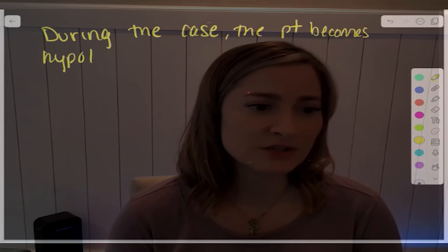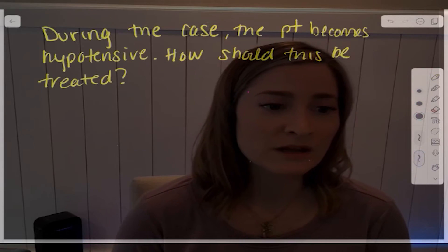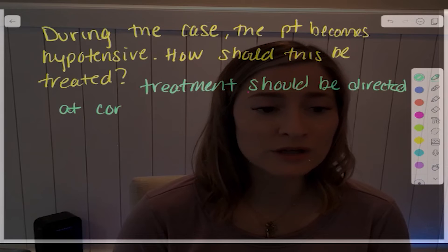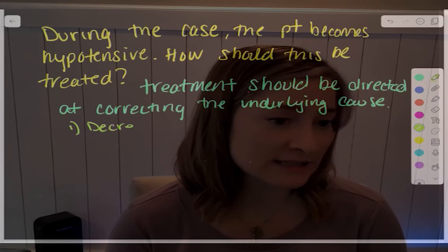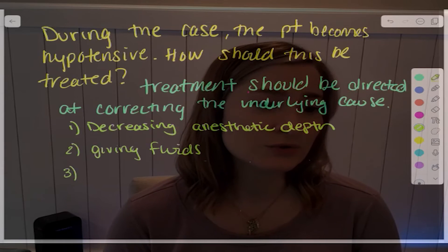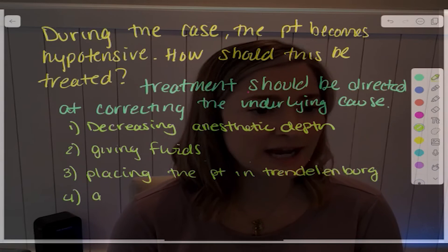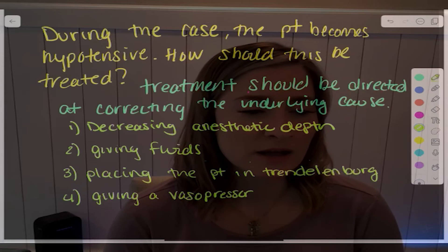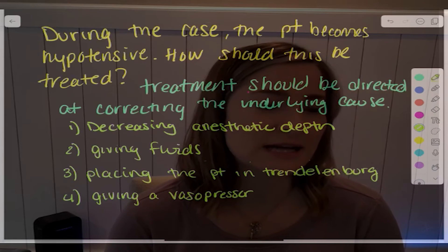Next trivia question: during the case, the patient becomes hypotensive — how should this be treated? Treatment should be directed at correcting the underlying cause. Consider decreasing your anesthetic depth, giving fluids, placing the patient in Trendelenburg (head down), and giving a vasopressor such as phenylephrine. If there's no obvious cause, the thing I would recommend most is just decreasing the depth of anesthesia.